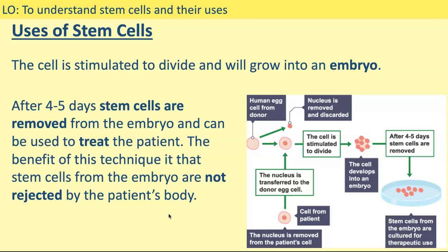If you are transplanted with cells, organs, or tissues from another donor with a different genetic makeup, your body could recognise that as a foreign body and your immune system can attack it. For example, if you had a liver transplant from a different person, your body could see that as a foreign body due to the antibodies present, and your immune system can attack and destroy the transplanted organ. So if you have stem cells from an embryo that has your genetic makeup, there is no risk of rejection.